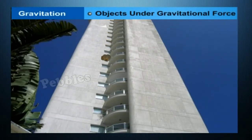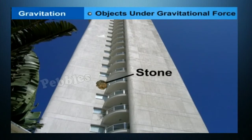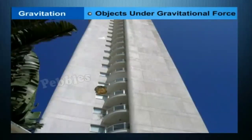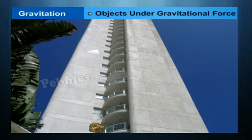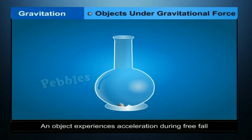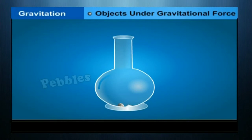Take a sheet of paper and a stone and drop them simultaneously from the first floor of a building. Observe whether both reach the ground simultaneously. We see that the paper reaches the ground a little later than the stone. However, if we do the experiment in a glass jar from which air has been sucked out, the paper and the stone fall at the same rate.